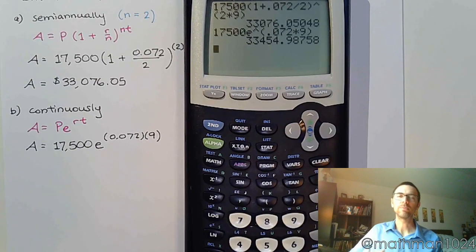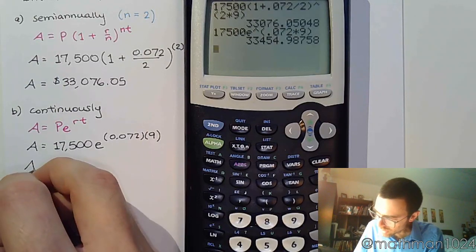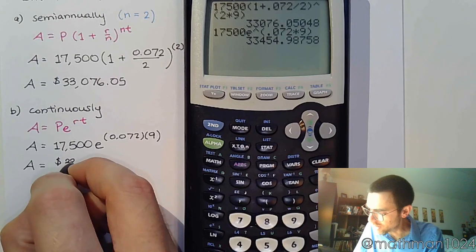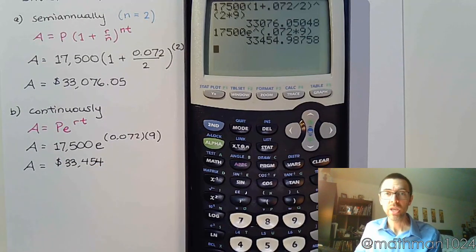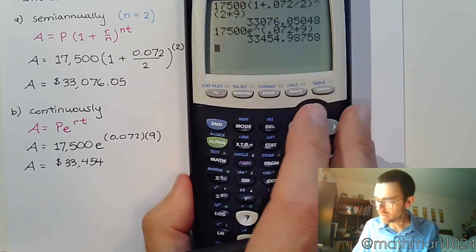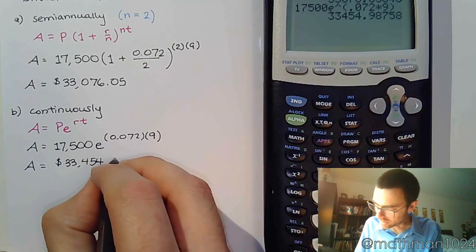It's not that far away. If you get something that's way off, then you know that you need to check something, check your parentheses. So $33,454, and rounding this to the nearest penny, that's going to be $0.99.